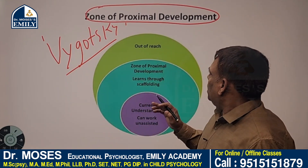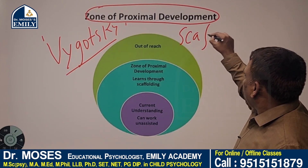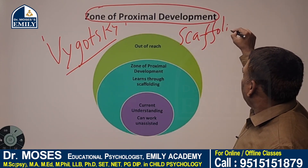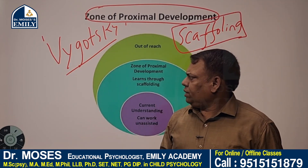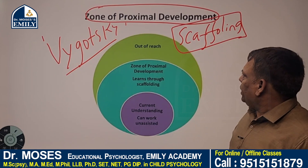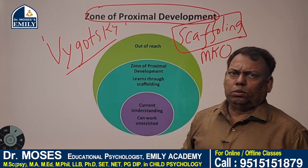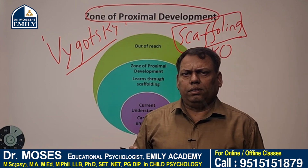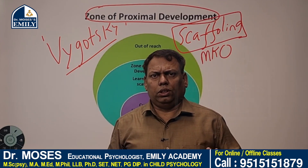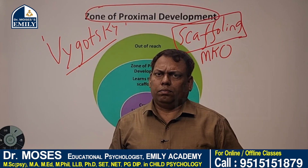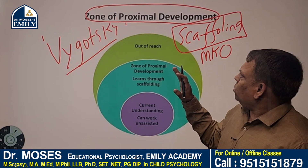The second concept is scaffolding. Scaffolding is nothing but helping the child to understand better knowledge. Point number three is MKO — More Knowledgeable Others. For example: parents, siblings, gifted peers in the classroom, teachers, tutors, and mentors.